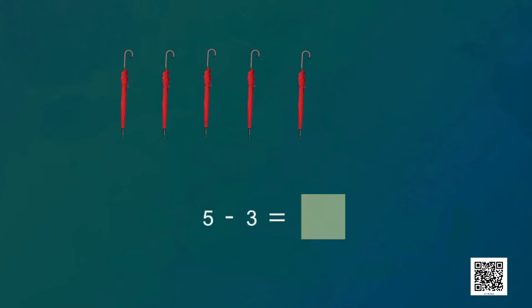Now it's Shubrata's, Abhivir's, and Navi's turn — they would also like to have umbrellas. I will subtract three more: one for Shubrata, one for Abhivir, and one for Navi. We write five minus three. Let's subtract three umbrellas from five. Now I am left with only two umbrellas. Five minus three is equal to two.